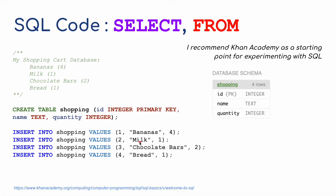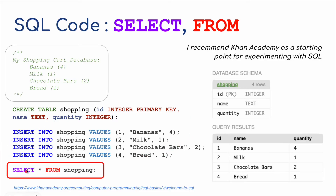I'm also going to insert milk as the second item — I only want one milk. The third item is chocolate bars — two of those. And the fourth item is bread. If I now select everything using the wildcard from shopping, it would list bananas, milk, chocolate bars, and bread all in a little query results table.